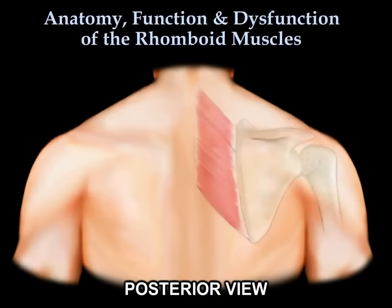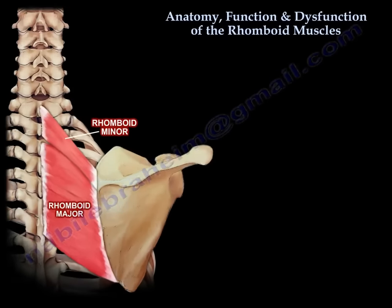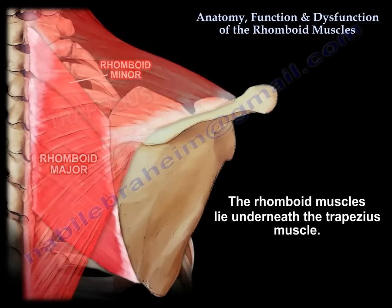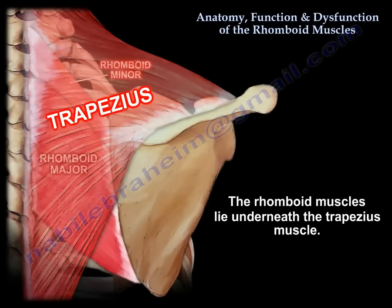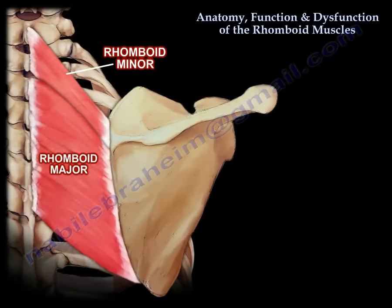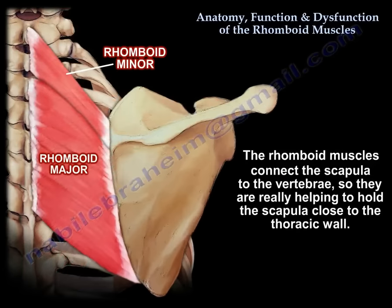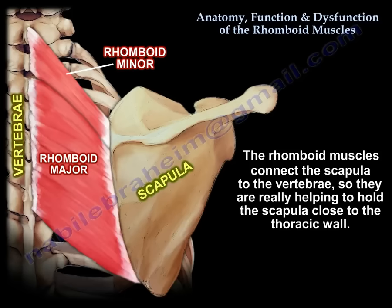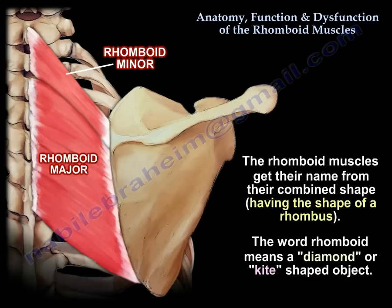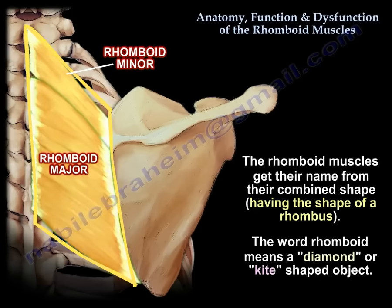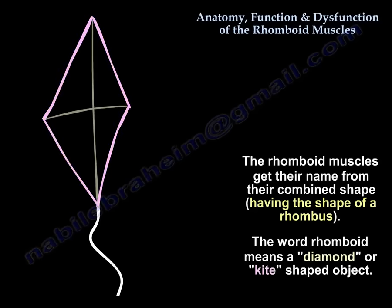Anatomy, function, and dysfunction of the rhomboid muscles. The rhomboid muscles rise underneath the trapezius. They connect the scapula to the vertebrae, helping to hold the scapula close to the thoracic wall. The rhomboid muscles get their name from their combined shape, having the shape of a rhombus. The word rhomboid means a diamond or a kite-shaped object.